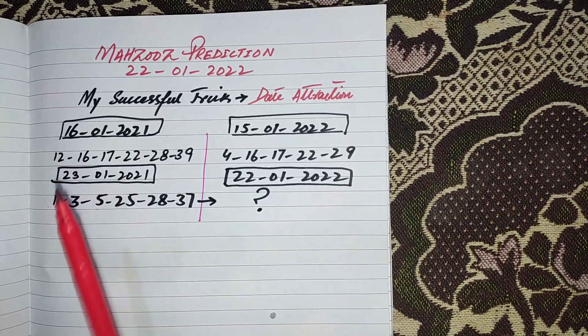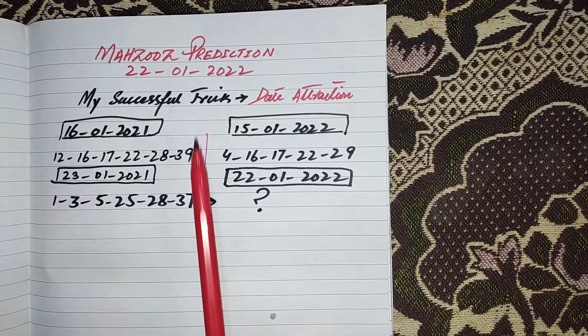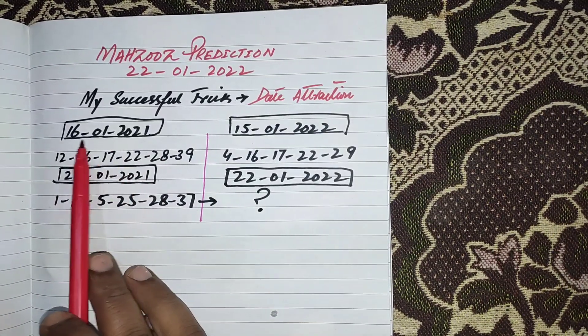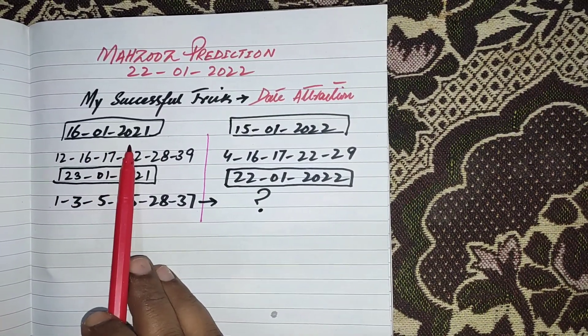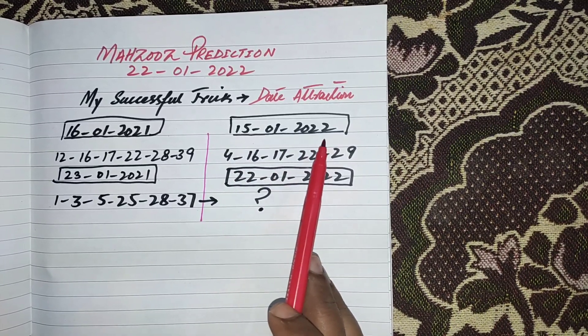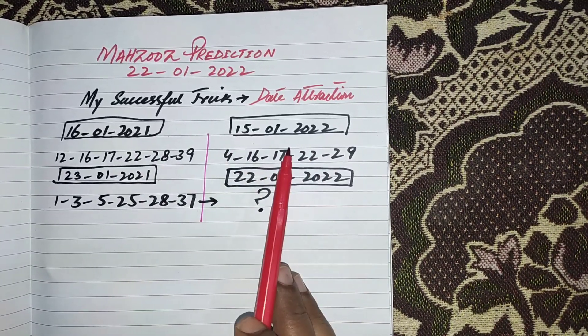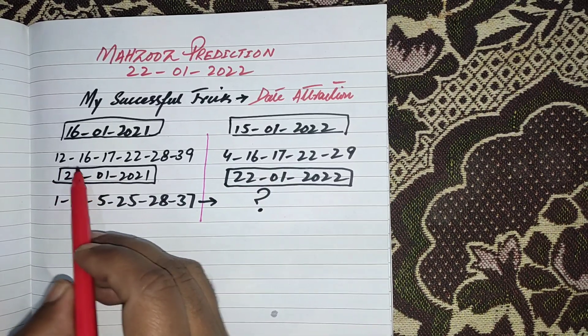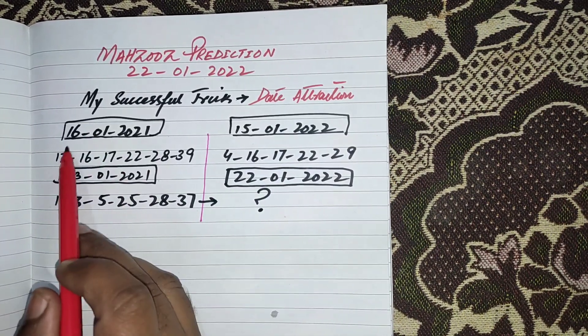As you can see in our previous result, this trick remains successful. This is past year date 16th January 2021 and this is 15th January 2022. These are almost same dates. This is past result which was drawn on 16th January.